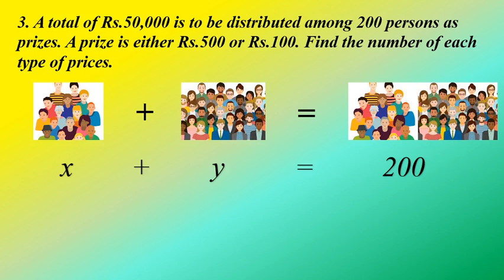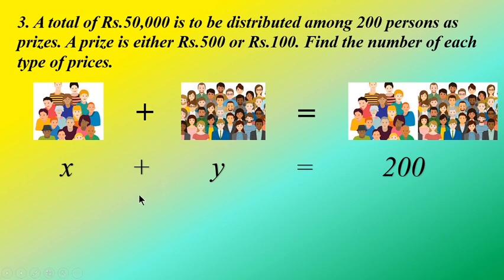We are going to visualize the given scenario in two categories. First is according to the number of persons. Since rupees 50,000 is distributed to 200 persons and there are two types of prizes, one set of people will get the prize type worth rupees 500 and another set of people will get the prize type worth rupees 100.